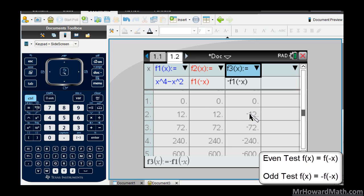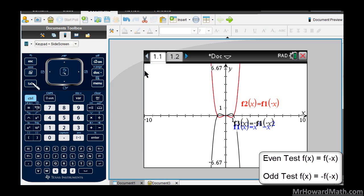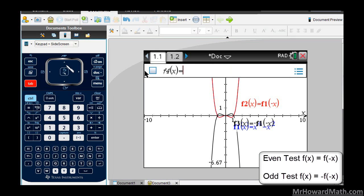The nice thing about setting it up this way is once I enter in function 2 and function 3, once I enter the even and odd test, I can just go back, hit tab, go back to my graph, go up to the function 1, and I can start putting in another one to test. This next one, we'll use X squared minus 2X. Hit enter.